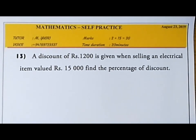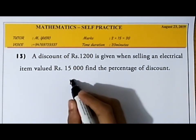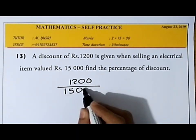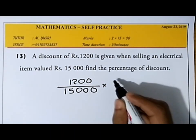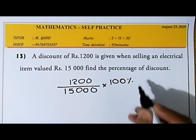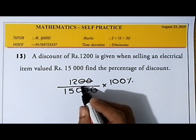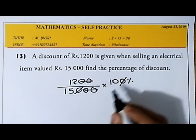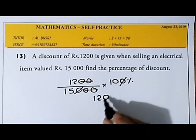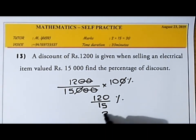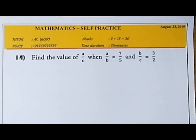Find the discount percentage. The discount is 1200 and the original price is 15,000. Divide 1200 by 15,000 then multiply by 100 to get the percentage. Cancel the zeros: 120 × 10 = 120, and 120 ÷ 15 = 8. So the discount percentage is 8%.